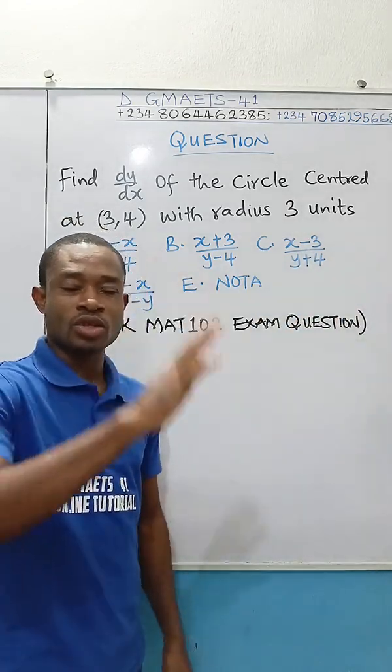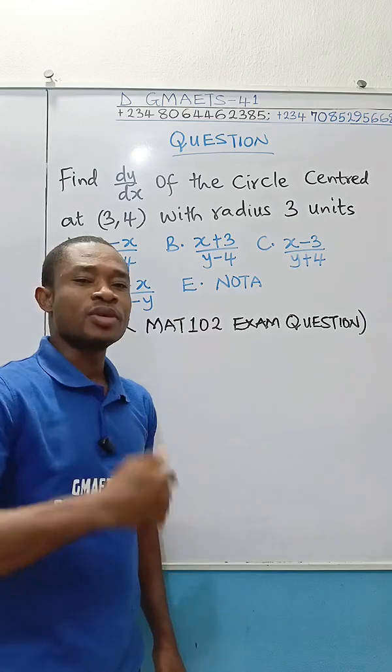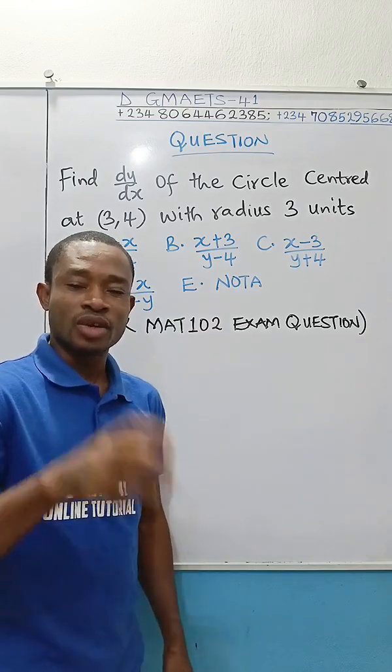How do we solve this problem? Simple. It's a two-step work. First, determine the equation of this circle, and then proceed to differentiate the equation of the circle.